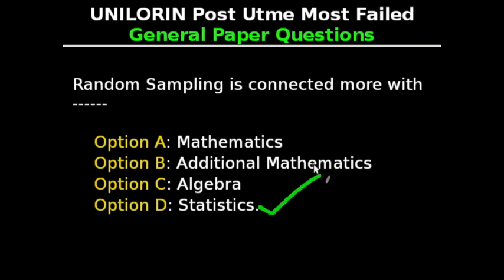Random sampling is one of the simplest forms of collecting data from the total population. Collection and analyzing of numerical data is what statistics is all about. In random sampling, each member of the population has an equal chance of being selected as subject. The entire process of sampling is done in a single step, with each subject selected independently of the other members. So the correct answer is Statistics.